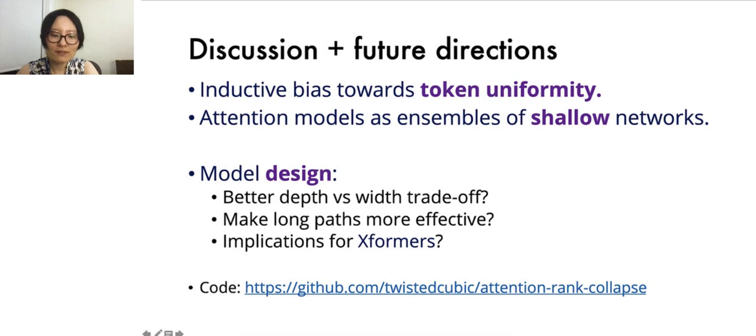It also opens a door to a myriad of exciting future directions. For instance, how can one leverage the token uniformity inductive bias revealed to design more effective networks, perhaps better at utilizing long paths? What are some practical implications for width-depth trade-off? What are the implications on efficient transformers? How do we prove meaningful lower bounds of the residual convergence for transformers? We believe that answering these questions will have broad implications in advancing the state-of-the-art. Our code is publicly available online. Please let us know if you have any questions or ideas for collaboration. Thank you.